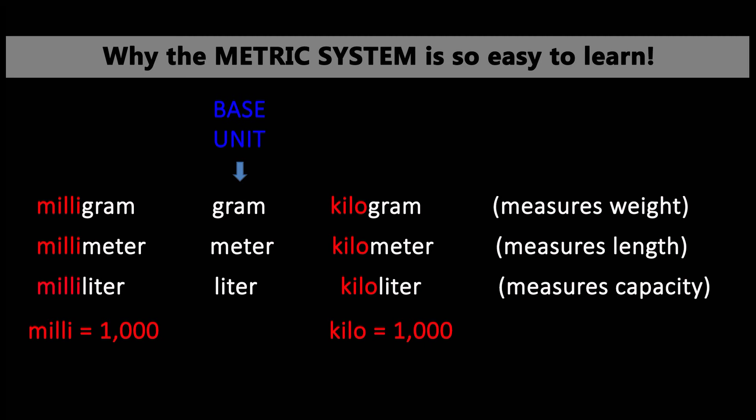Now look at meter — we know millimeters are teeny tiny. There are a thousand millimeters in a meter. And when you look at kilometer, they're for bigger distances, so it means a thousand meters are in a kilometer. Lastly for liter, a milliliter would be a tiny amount like in a dropper — a thousand milliliters would be in a liter. A kiloliter is a bigger measurement, meaning there are a thousand liters in a kiloliter.